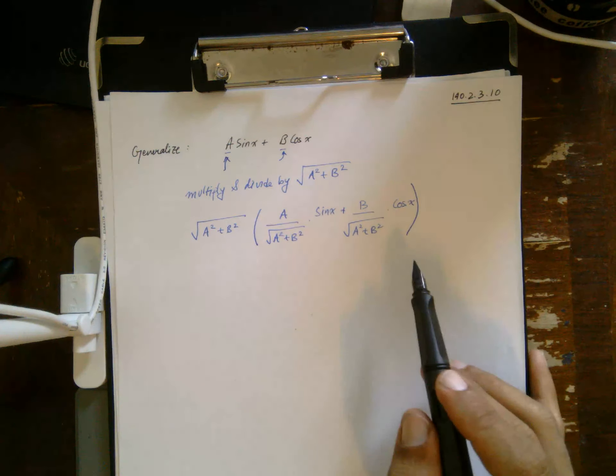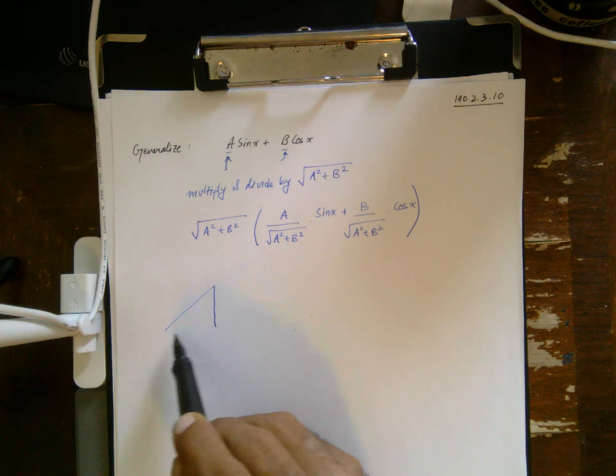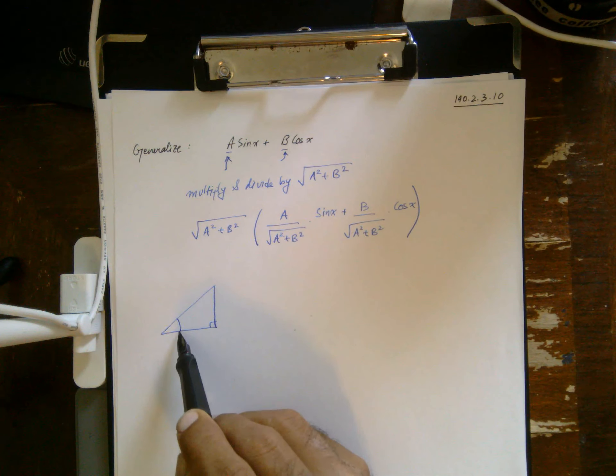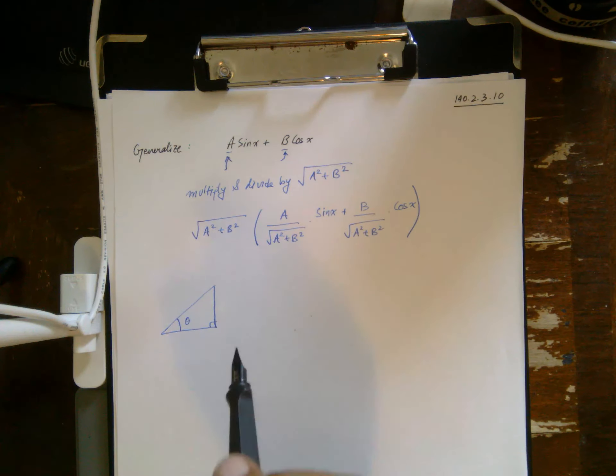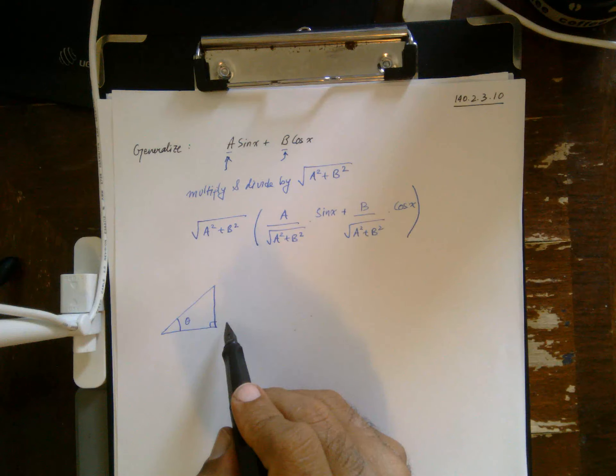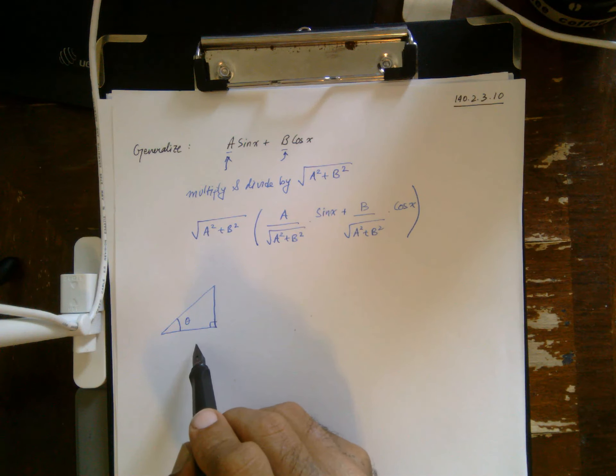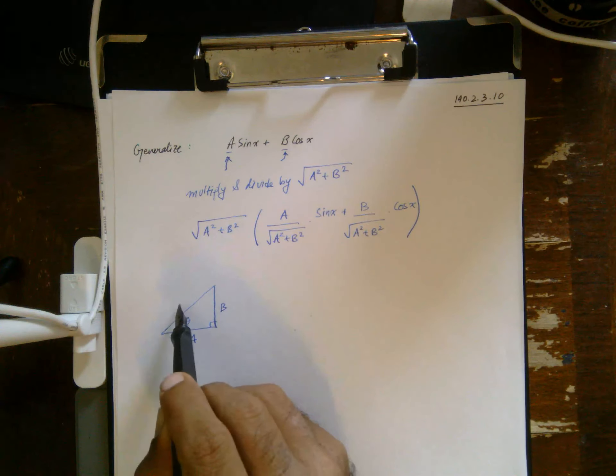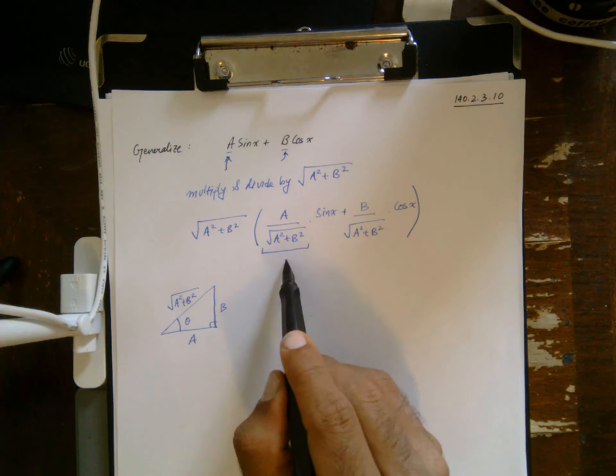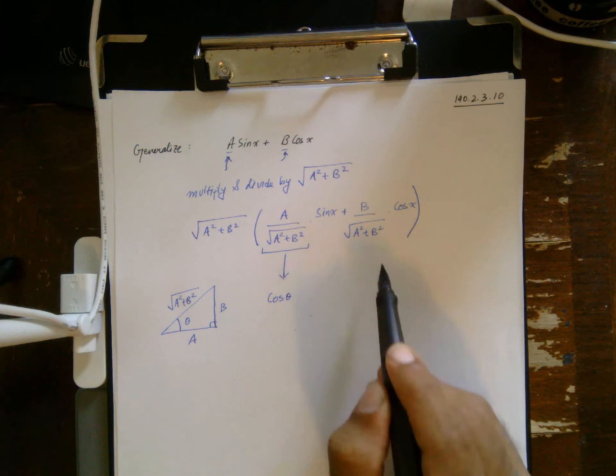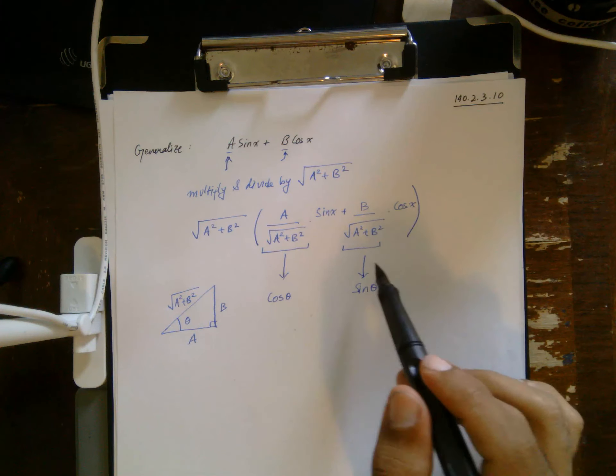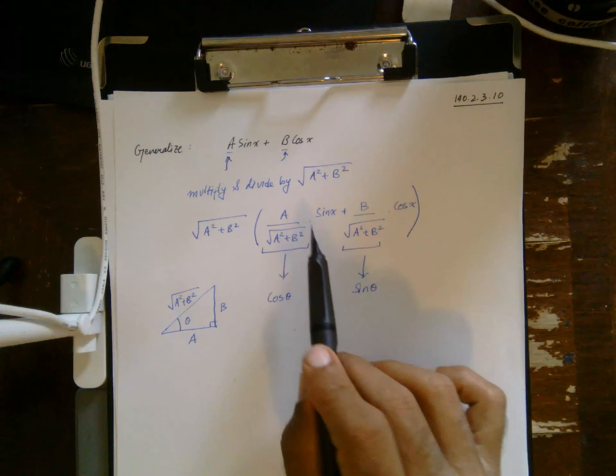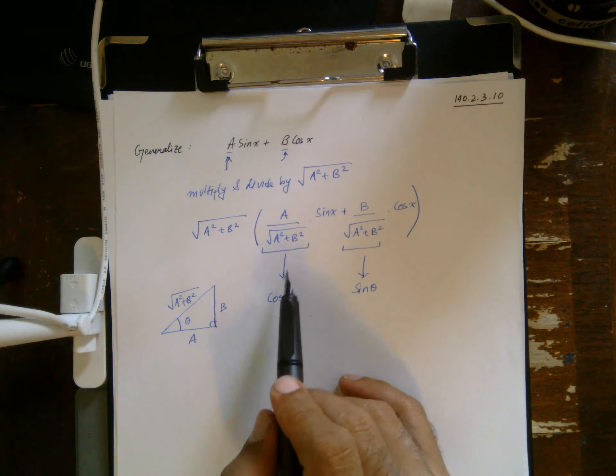Now why this works is that I can say that I take this triangle with some angle theta, and let's say this is a, this is b, and this is going to be square root of a squared plus b squared. And this thing here exactly turns out to be cosine theta, and this thing turns out to be sine theta. So it's not that we chose to multiply and divide by this; it's because we know this is going to work out.